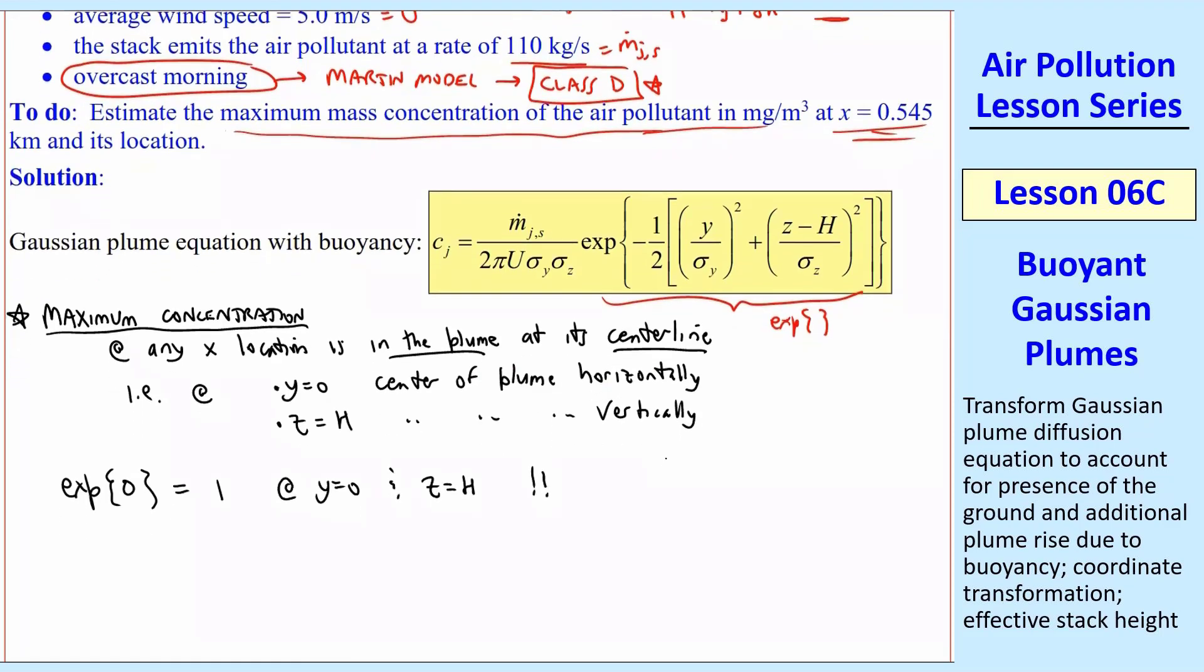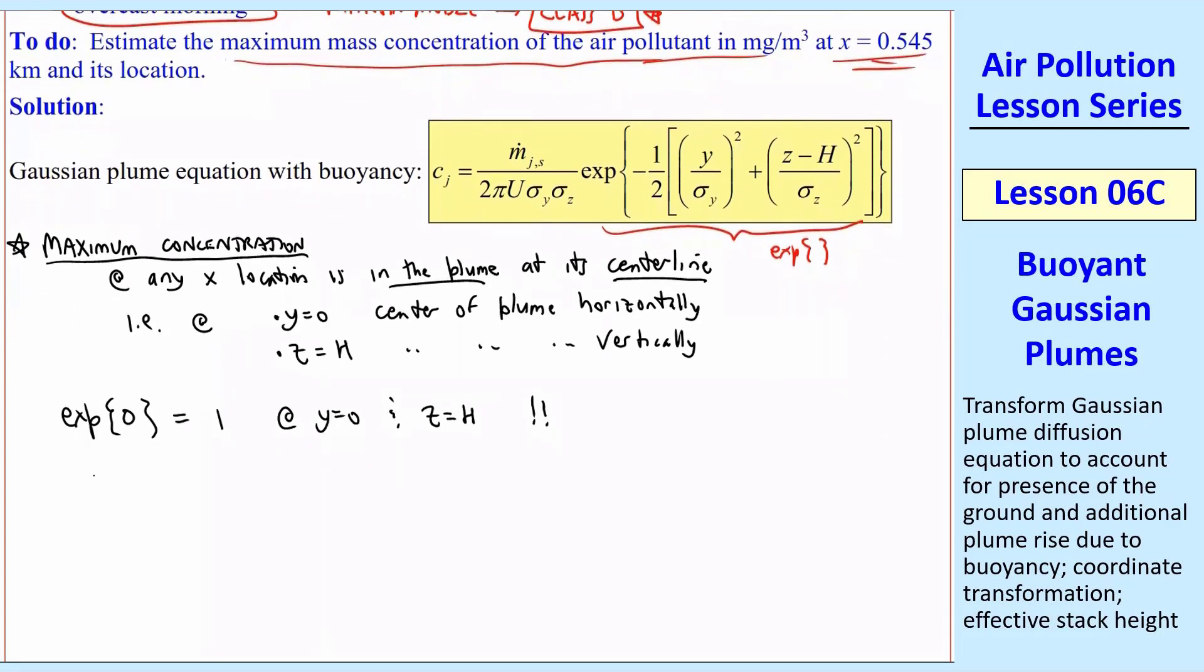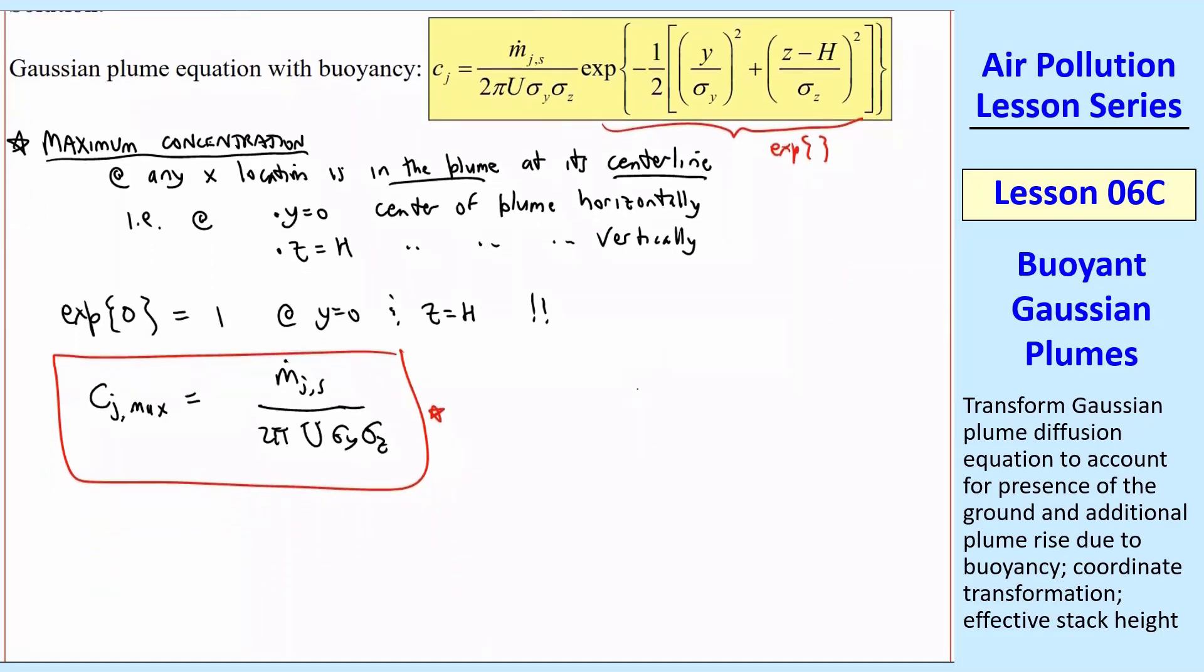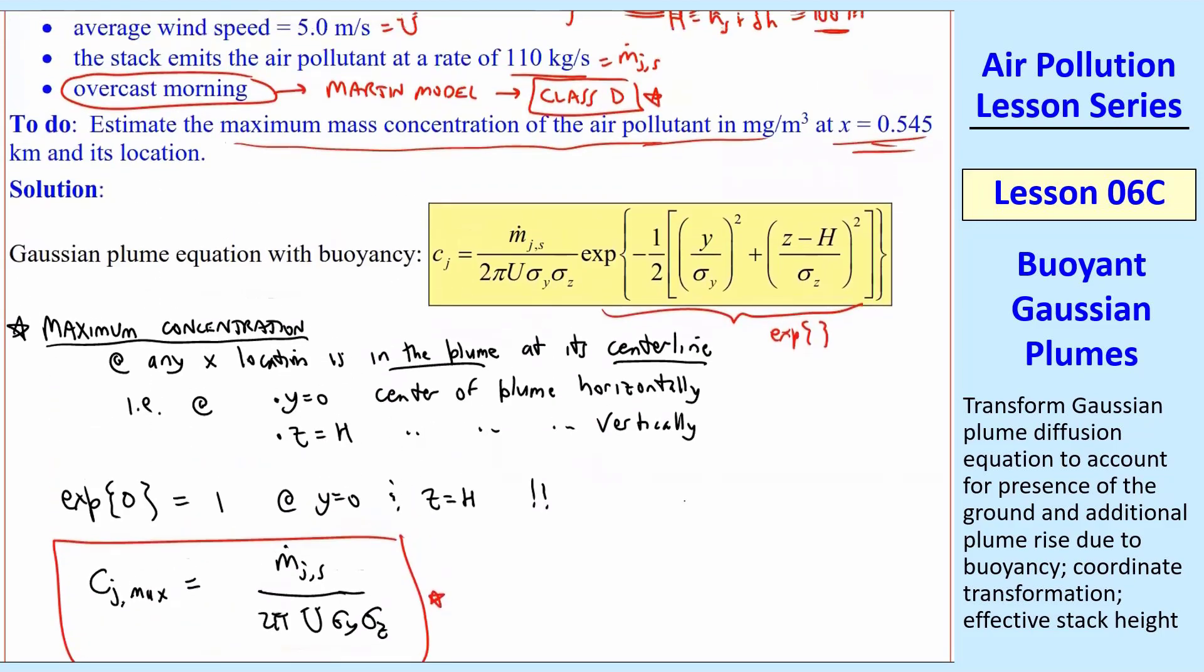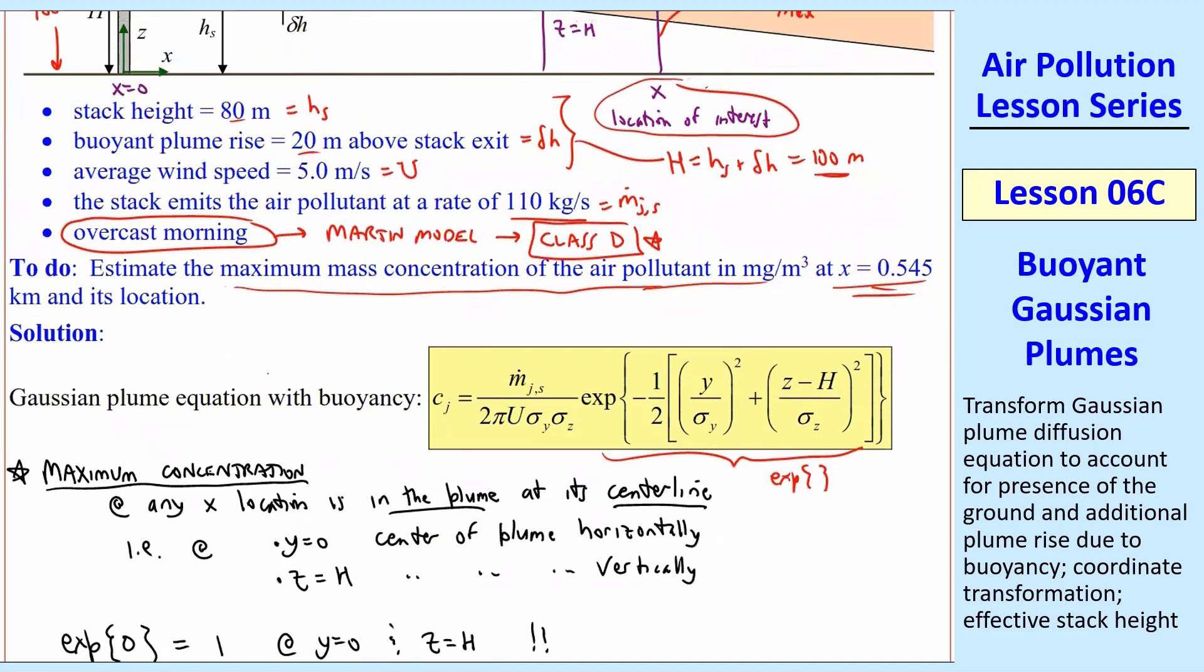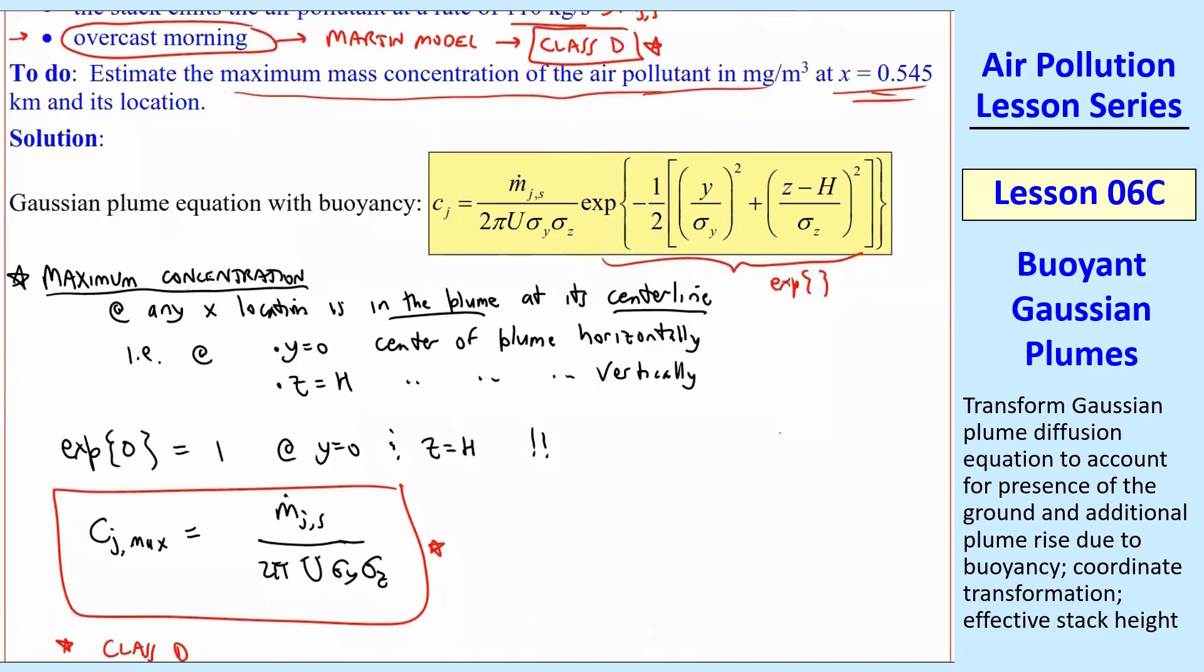And so this is one at Y equals zero and Z equal H. So that's nice because now we just eliminate all that stuff to calculate. And we can just write our answer then as CJmax is equal to simply M dot J as the source over the denominator, which was two pi U sigma Y sigma Z. And so that's our answer in variable form. And so now all we have to do is calculate the numbers. Now, what I'm going to do here is not show all this because I want you to do this as a review. And I already told you this is class D, but of course, on the quiz or on the final exam, if I give you a problem like this, you will have to look at the wind speed and the type of atmospheric conditions to figure out what class it is.